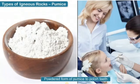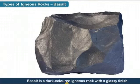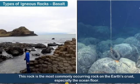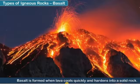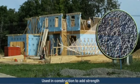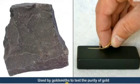Dentists use a powdered form of pumice to polish teeth. Basalt is a dark coloured igneous rock with a glassy finish. It is the most commonly occurring rock on the Earth's crust, especially the ocean floor. Basalt is formed when lava cools quickly and hardens into a solid rock. Basalt is used in construction and road building. It is also used by goldsmiths to test the purity of gold.